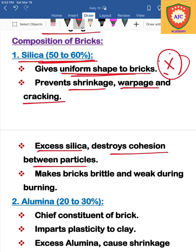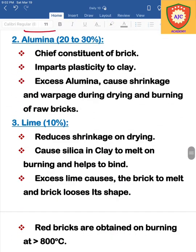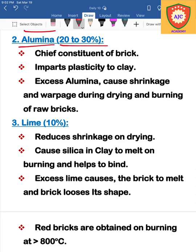If silica is deficient, the bricks are weak and the burning process is affected. The next ingredient is alumina, which is present at 20 to 30 percent. Alumina is a very important ingredient in brick composition. If alumina is used as the chief constituent, it is the most important ingredient for brick quality.